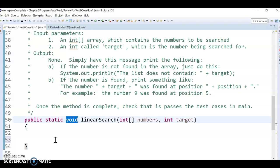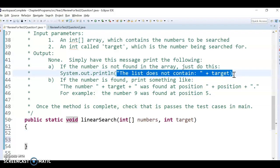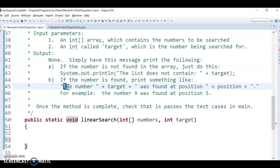but I'm just going to have it print out instead. So you just have to print out like the list does not contain target, or you can print like if it is found, you put the number target is found at whatever position. Okay, so I would pause the video and give this a shot before watching the solution.